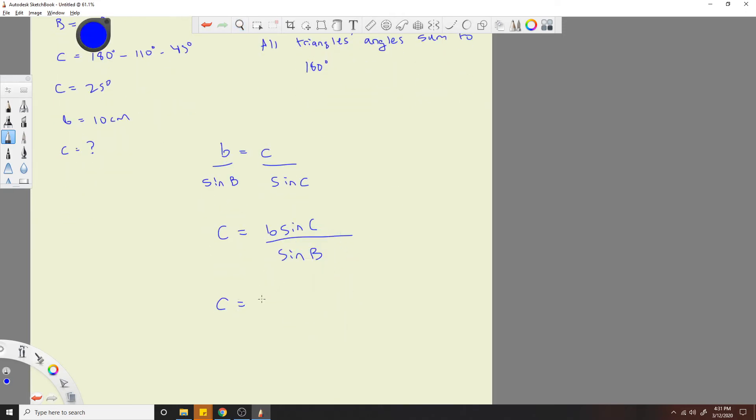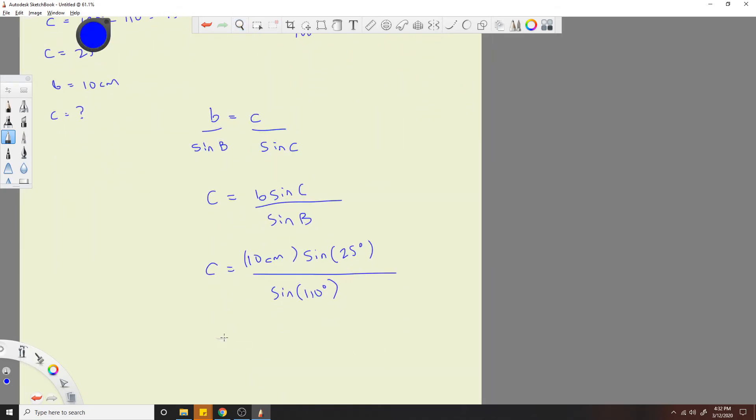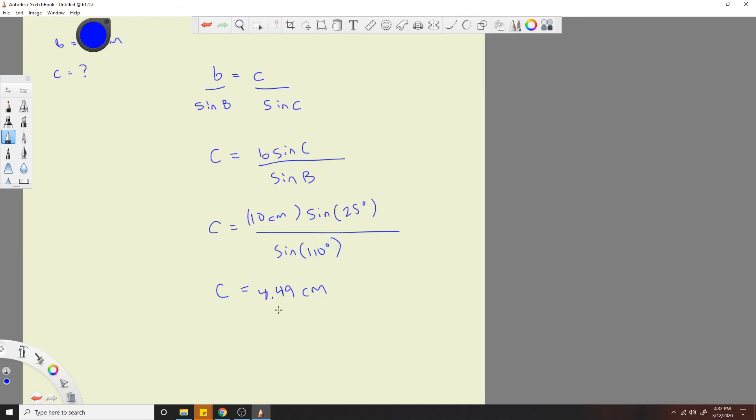B is 10 centimeters, sine of C. Sine of B is 10 centimeters. So C would be equal to 4.49 centimeters. Is roughly equal to like 4.5.